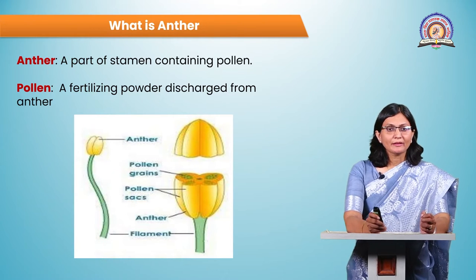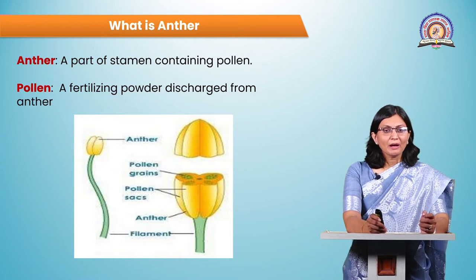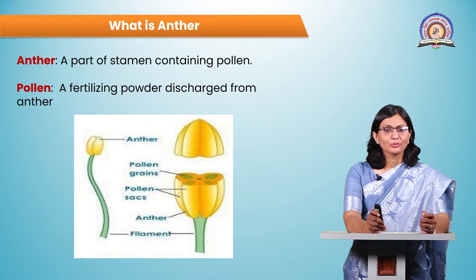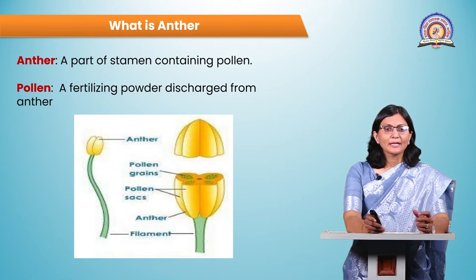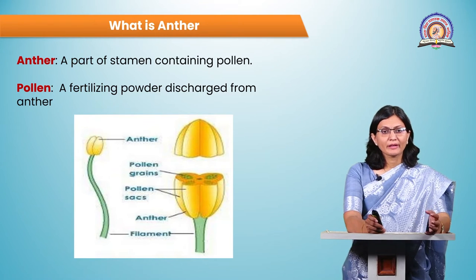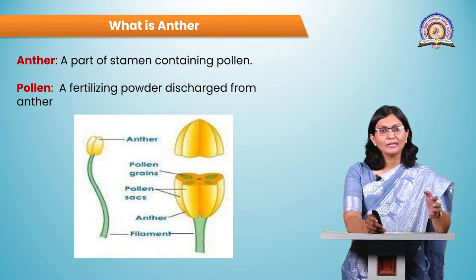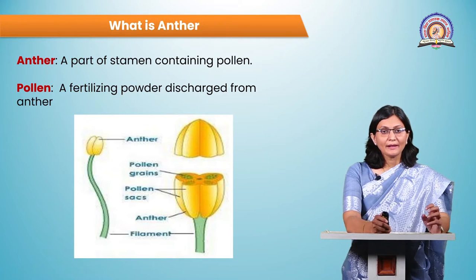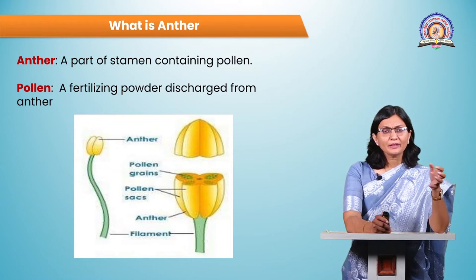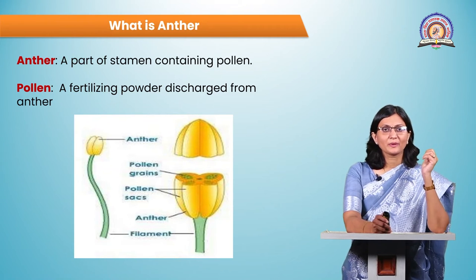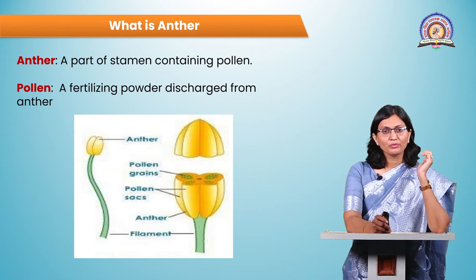In the diagram, you can see various parts of the anther. The anther is divided into parts like the pollen sac, where pollen grains are formed. After dehiscence, the pollen grains are released from the anther, and when they get transferred onto the stigma, fertilization takes place and the embryo forms.